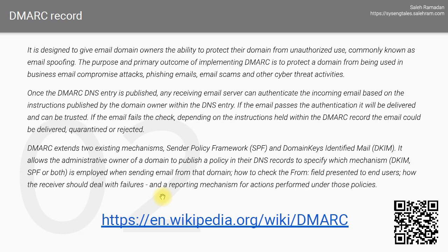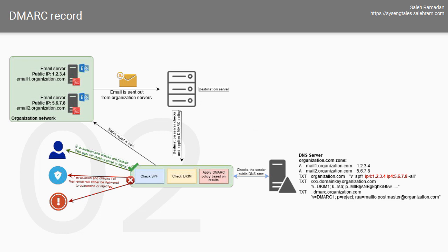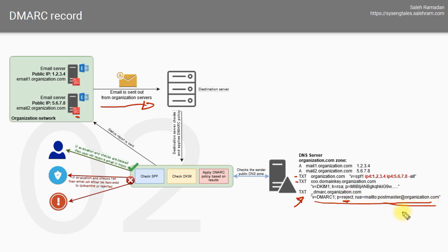To visualize the DMARC flow: when the sender sends an email from the organization server, they would have set up the DKIM record in their DNS, and of course the SPF record, and then published the DMARC policy record. This sample policy record says the policy is 'reject' and the report should be sent to a specified mailbox. We are checking against both SPF and DKIM together, and if any one of those fails, the reject action will be taken and the report will be sent to the organization.